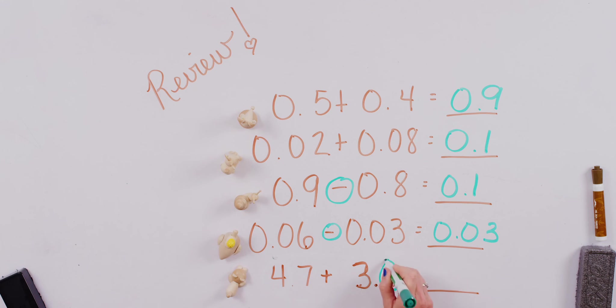Seven plus one point three, we get eight point three. There we go. A nice little review to get us warmed up and started. Okay, you ready for some number stories? Let's do it.